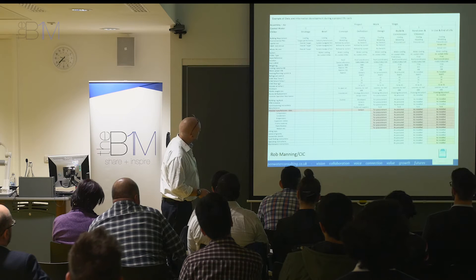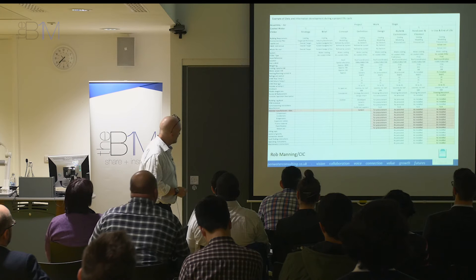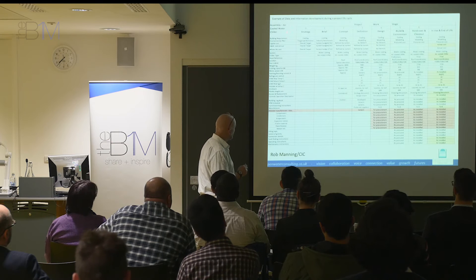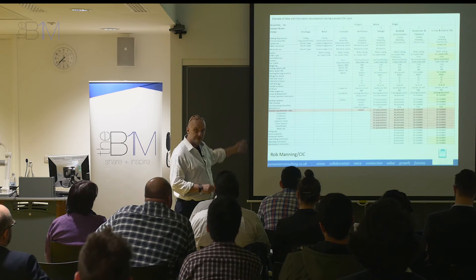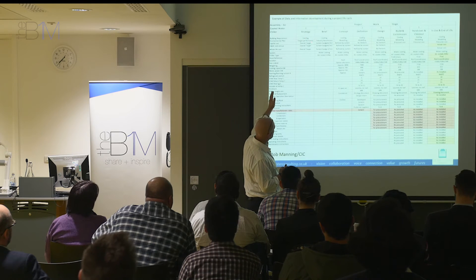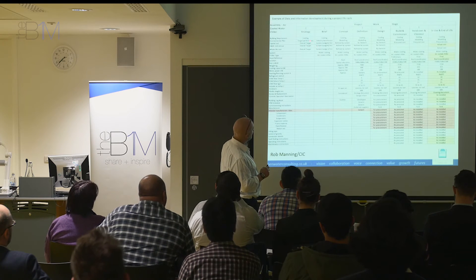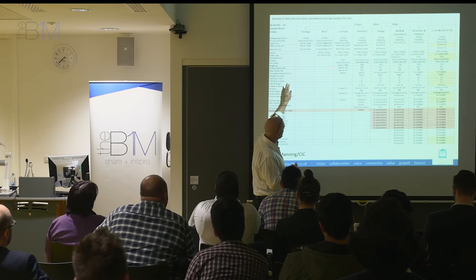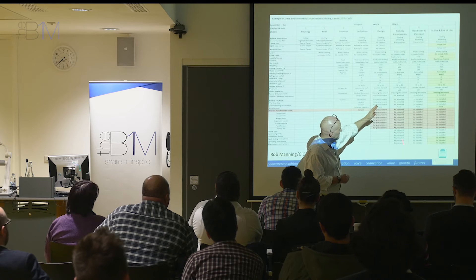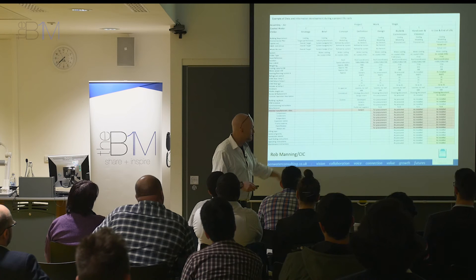This is a very tiny COBie spreadsheet that Rob Manning produced at the CIC. It's for a chiller unit. He's listed the stages and the attributes that we want to know about this chiller unit. It starts with very conceptual, general information and becomes very detailed over here. There's nothing surprising about that, because that's the way the design and maturity process works.